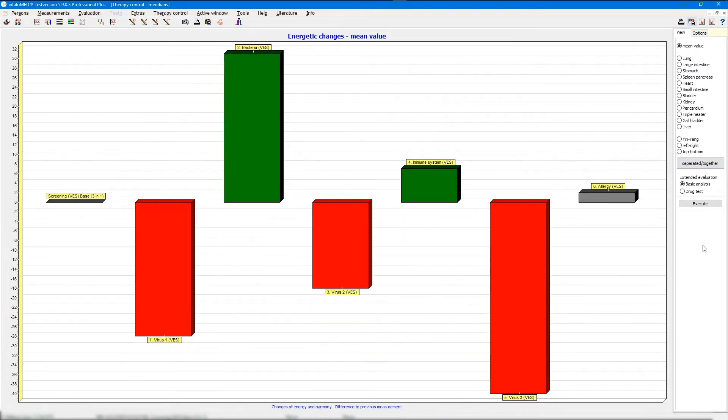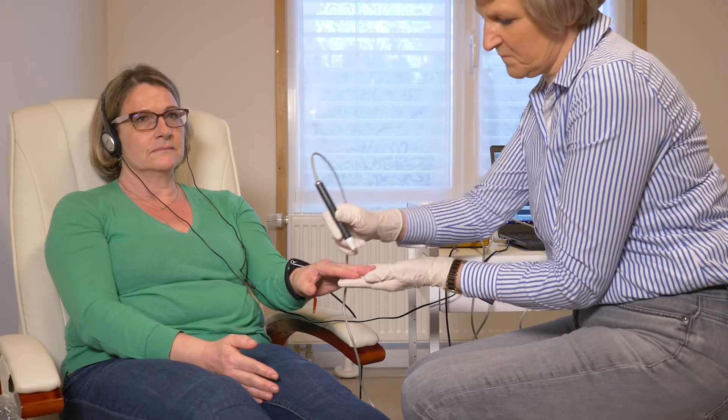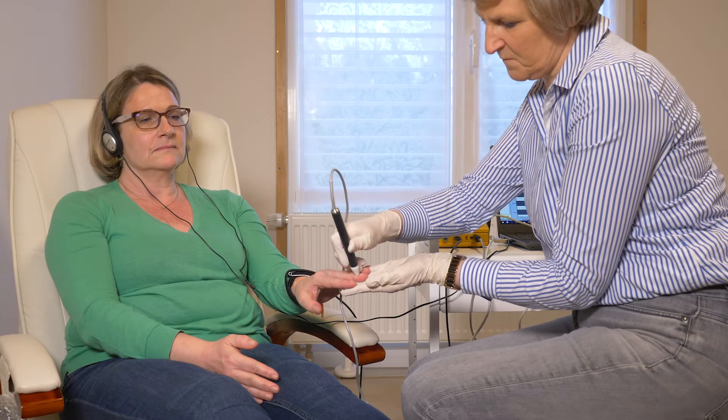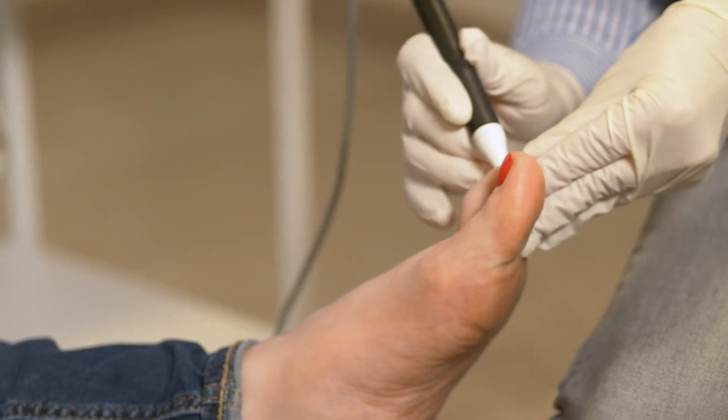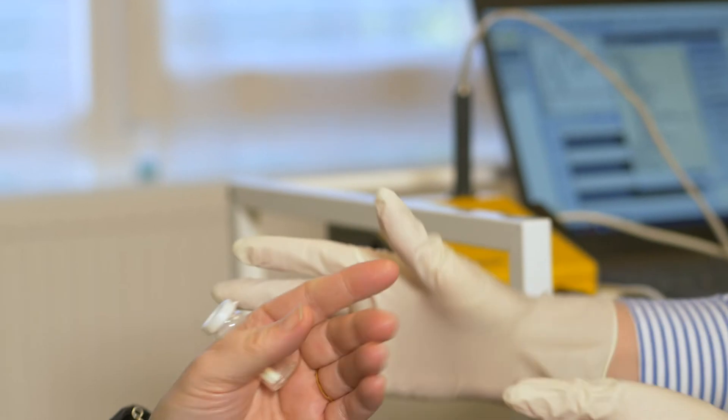After interpreting the graphic, we can now choose the different preparations for the patient. The drugs that are not to be tested are easily excluded with a double click. The measurements start again on the 24 points. In addition to virtual testing using frequency spectra, the software also offers the option of manually testing existing preparations in clinics or practices.